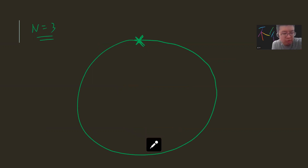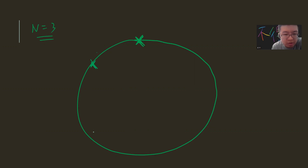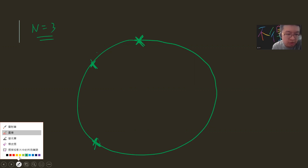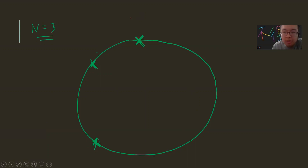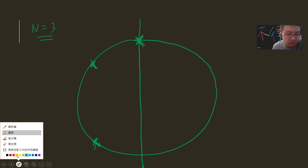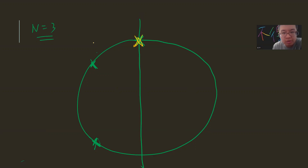And then you want to place the two other points — they can be here or here. So you're asking: what's the probability that all three points lie on a semicircle? There are three cases. The first case is that they're all on the semicircle of this one fixed point — if you cut it and go counterclockwise, they're all on that semicircle.